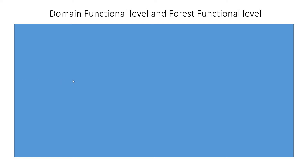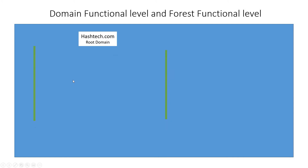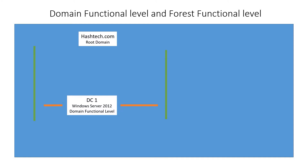As an example, we have a domain which is hashtag.com and it's having domain controller one with Windows Server 2012 installed, and domain controller two with Windows Server 2016 installed. In this scenario, the domain functional level obviously sits at the lower version.